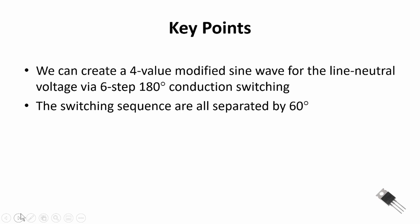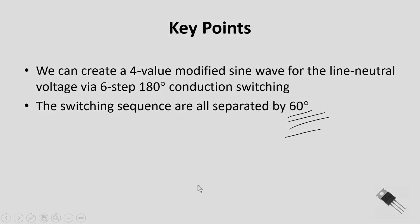Let's recap the key points. We showed how to create a four-value modified sine wave for the line-to-neutral voltage using six-step 180-degree switching. The switches must be ordered strategically for the A, B, and C phases to get the proper conduction angles — all switching sequences are separated by 60 degrees. In part two of this video, we'll investigate the RMS value and total harmonic distortion for this four-value modified sine wave from our six-step three-phase inverter.